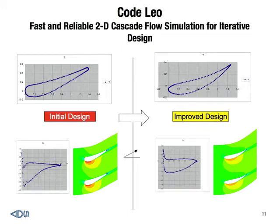Next chart gives you a view on this 2D capability. Here is one design on the left hand side — it's an initial design, and we see a really large LAD over-speed.